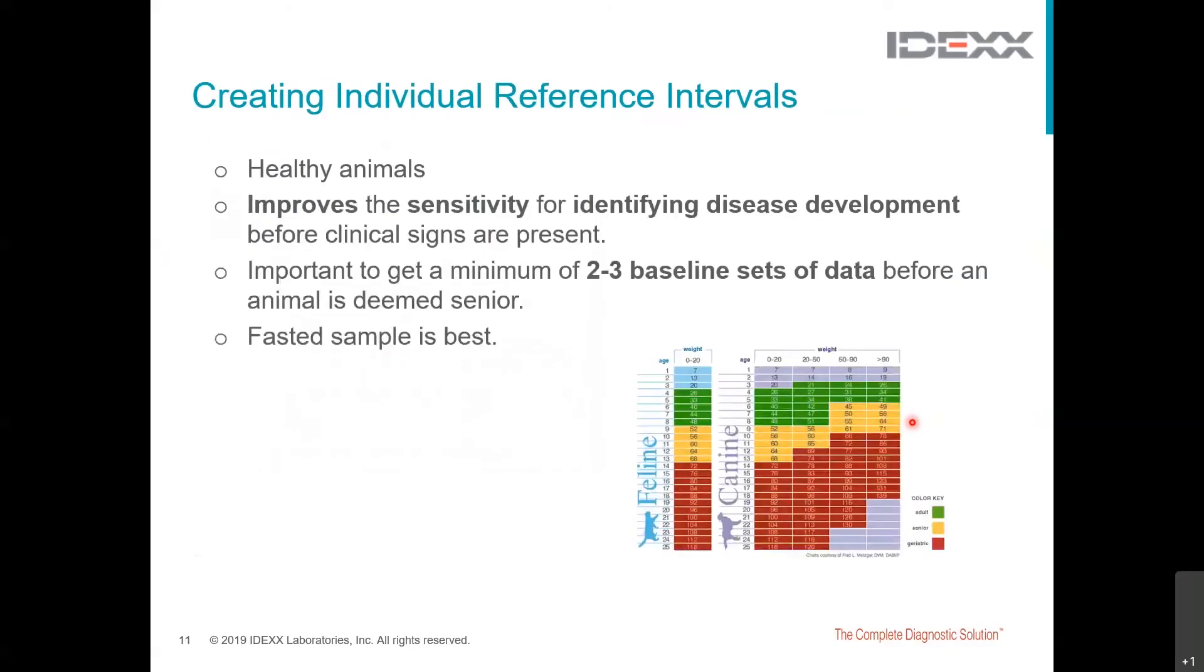So how do we then go about creating individual reference intervals for our patients? It's relatively straightforward in that what we want to do is take blood samples when the animal is deemed to be healthy, so as best as we can assess based on history and physical exam, and we ideally want to collect two to three sets of data before that animal is deemed senior, so roughly when they're in that one to seven-year age range. We can therefore use that pre-anesthetic test result that was normal in the three-year-old dog that we performed the routine dental on, or that six-year-old dog that needed a mass removed. In these situations, the pre-anesthetic test result not only provides value in terms of us being happy that it is safe to proceed with the anesthetic on that day, but in fact, most of the value in these normal results will in fact come in the future as the animal ages, as they will help create the patient's individual reference interval that will then allow us to identify disease earlier, potentially before the patient has even developed clinical signs.